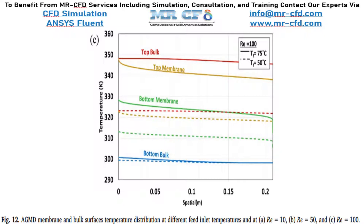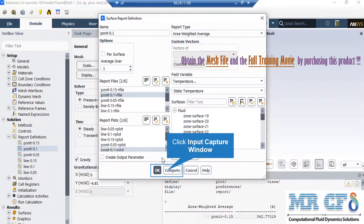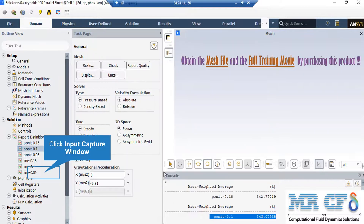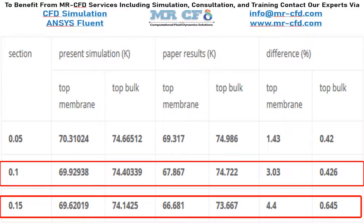As explained in the initiating slides about validation, we have brought figure 12 of the paper, which we discussed in earlier slides, and we are going to validate the results using our CFD simulation. If you double click on point 0.1 and then click on compute, the software will give you the temperature for the point with the spatial value of 0.1. Point reports give you the temperature on the membrane boundary, whereas line reports give you the temperature on the wall. The comparison table shows our CFD results against the paper's results for sections at 0.1 and 0.15.